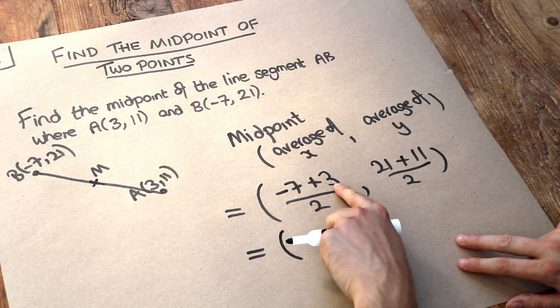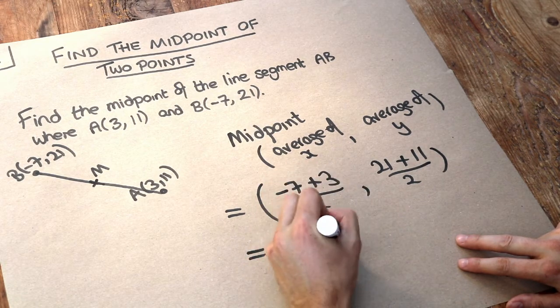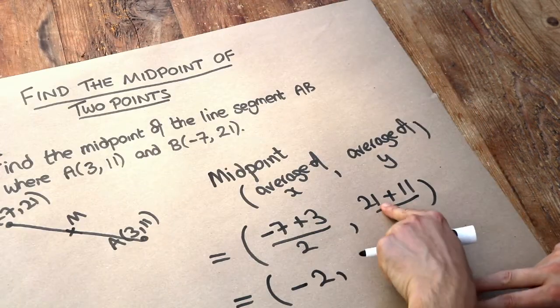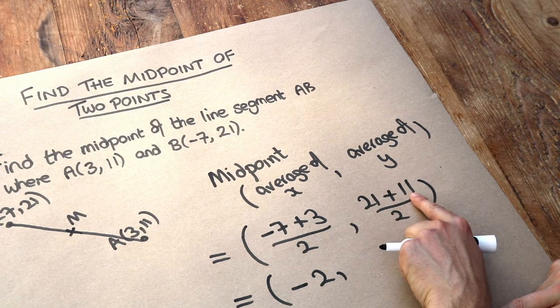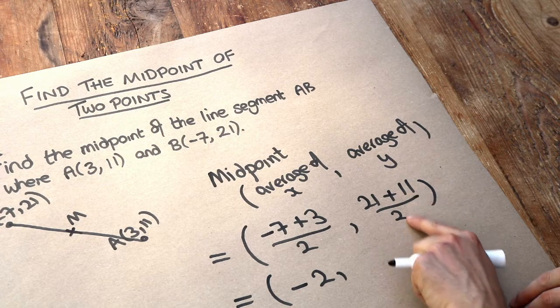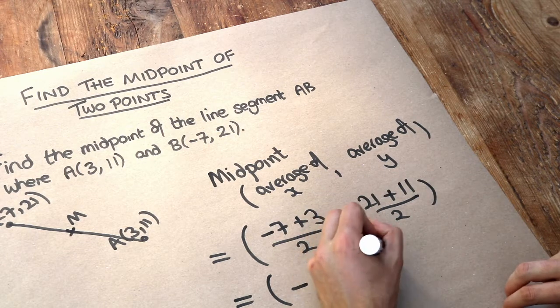-7 plus 3 is -4, divided by 2 is -2. And then for the y value, 21 plus 11 is 32, and then 32 divided by 2 is going to be 16.